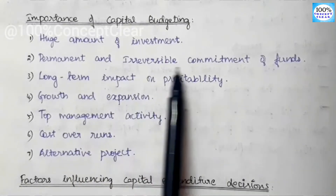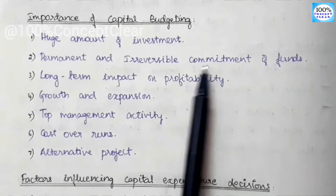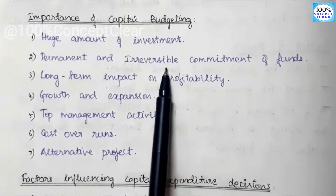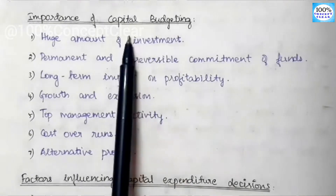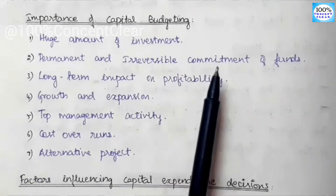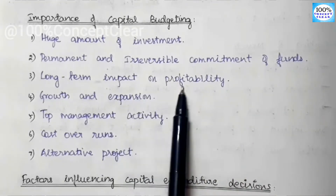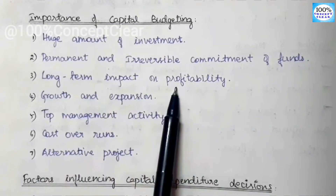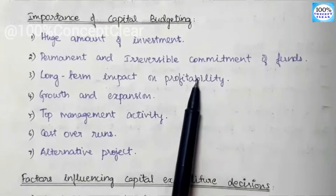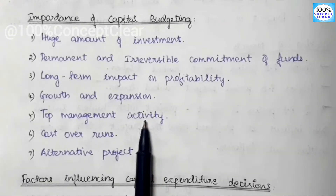The next importance is the permanent and irreversible commitment of funds. There is a lot of investment involved. When you make a capital budgeting decision, you can get a profit in business, and this has an impact in the long term. Next is Growth and Expansion — investment decisions in capital budgeting are very important for business growth.